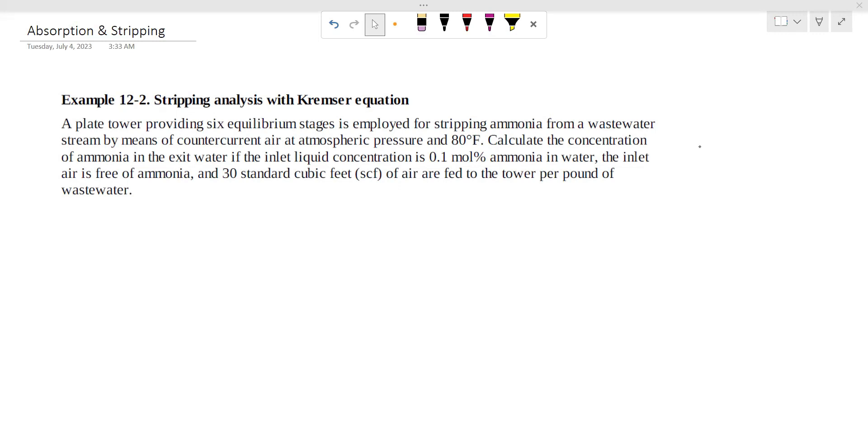A plate tower providing six equilibrium stages is employed for stripping ammonia from a wastewater stream by means of countercurrent air at atmospheric pressure at 80 degrees Fahrenheit. Calculate the concentration of ammonia in the exit water if the inlet concentration is 0.10% ammonia in water, the inlet air is free of ammonia, and 30 standard cubic feet of air are fed to the tower per pound of wastewater.